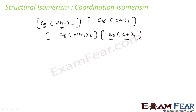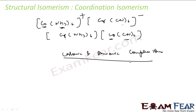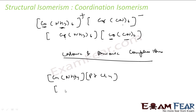This type of isomerism exists in coordination compounds made of both cationic and anionic complex ions. If we interchange the ligands between the cationic and anionic metal entities, we get coordination isomers. Another example can be copper with ammonia paired with platinum with a different ligand — then platinum with ammonia. That is coordination isomers.